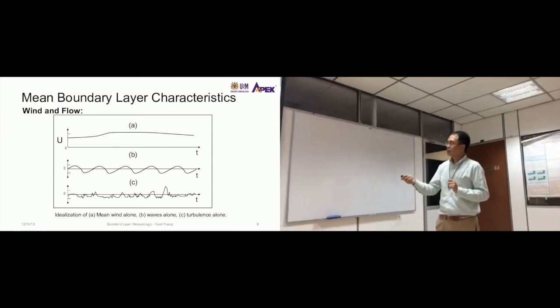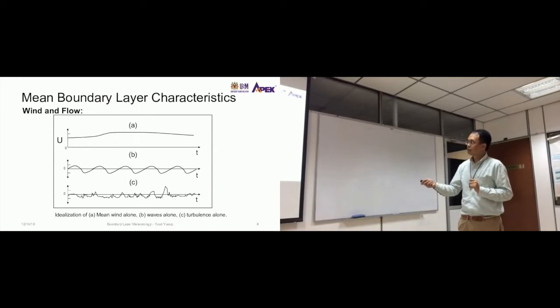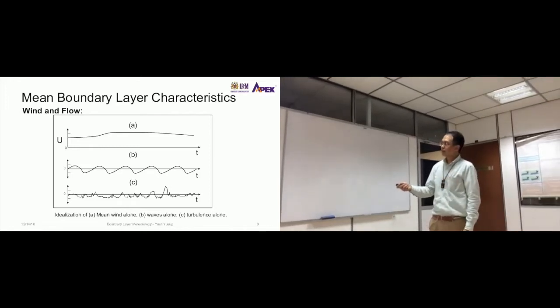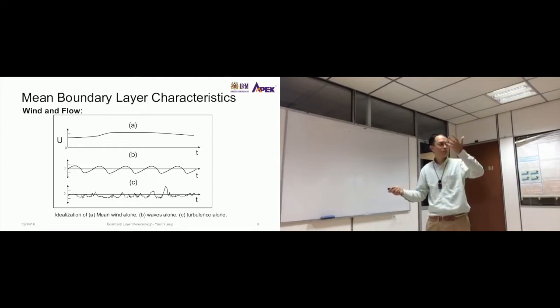The mean wind and the waves carry the pollutants horizontally, but the turbulence carries the pollutants or the moisture vertically.